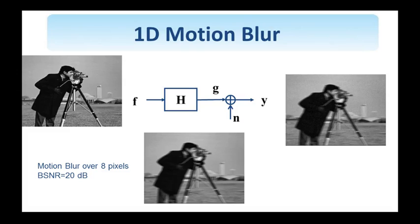Here's an example we'll be using throughout this presentation to compare different restoration approaches. This is the original cameraman image. It's blurred by a system h which introduces motion blur over 8 pixels in the horizontal direction. Then noise is added so that the blurred signal-to-noise ratio is 20 dB. This is clearly blurred. The noise is hardly visible, but through the restoration when it's amplified it will be really visible and bothersome.